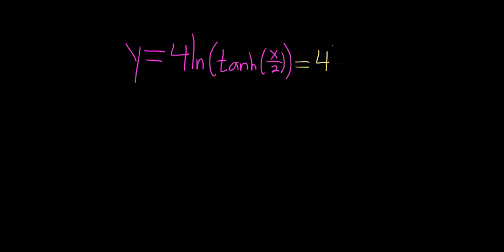This is 4 natural log tanh, and this might seem like a small step, but I think it does help. So the x over 2, we can write that as 1 half x. It just makes it easier to think about because when you take the derivative of 1 half x, you're really just taking the derivative of x, which is 1, so you just get 1 half. The 1 half hangs out.